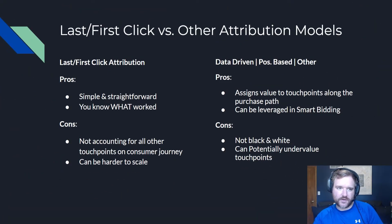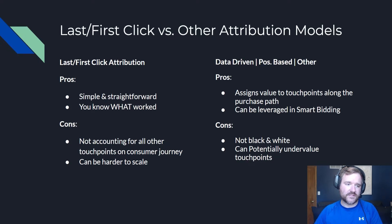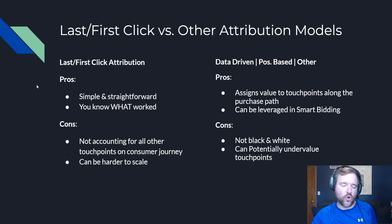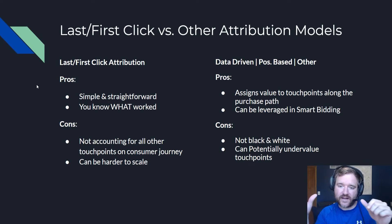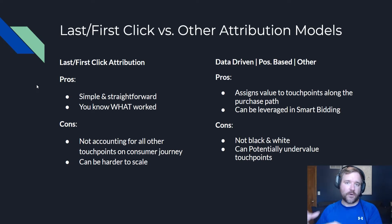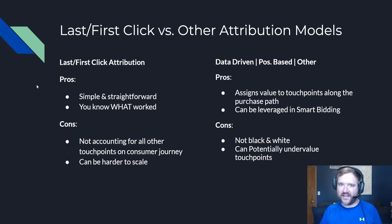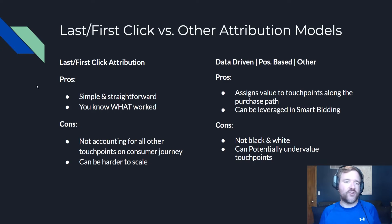Considering the pros and cons: one of the biggest pros with last click or first click is that it's really black and white — it's straightforward and you know exactly what worked. On the flip side, with data-driven, you're able to look at value across every single touchpoint on the customer journey to find out how things are being influenced, and you can take smart bidding into account to potentially 10x your results. There's a lot more scalability on the data-driven and position-based side.